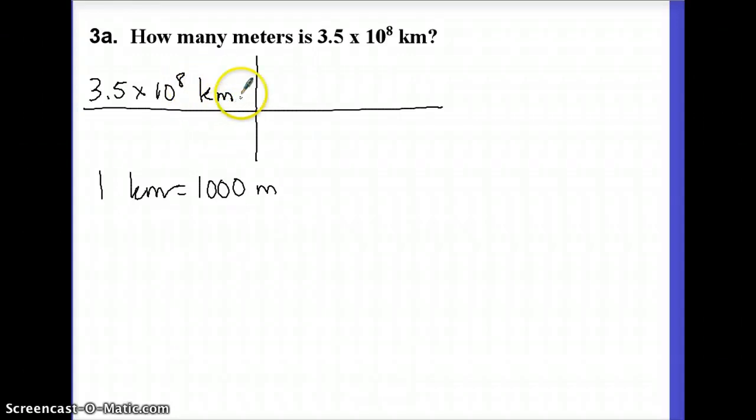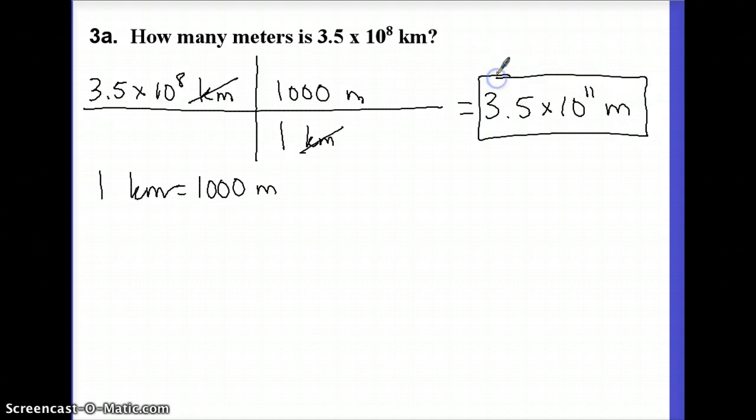In this case, we're trying to get rid of kilometers, so we are going to put kilometers on the bottom here because then I'll have kilometers in the numerator and kilometers in the denominator and they'll cancel. So I'm going to put one kilometer here and a thousand meters here. You can see my kilometers cancel out and all I'm going to be left with is meters. Then I multiply everything on top, divide by everything on the bottom. In this case, you end up getting 3.5 times 10 to the 11 meters. That's the basic concept, and hopefully that seems kind of familiar from chemistry.